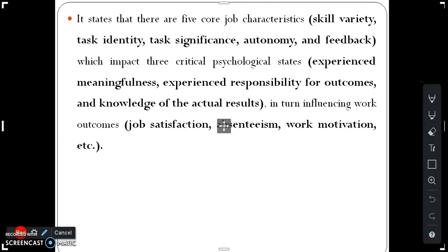It states that there are five core job characteristics: skill variety, task identity, task significance, autonomy, and feedback, which impact three critical psychological states: experienced meaningfulness, experienced responsibility for outcomes, and knowledge of the actual results.